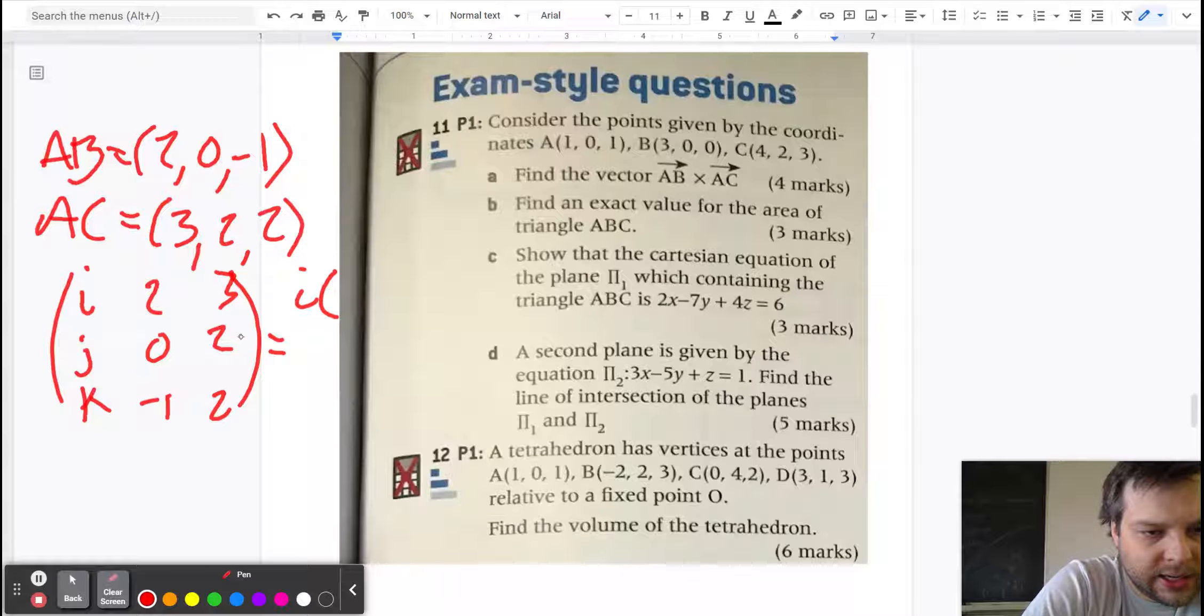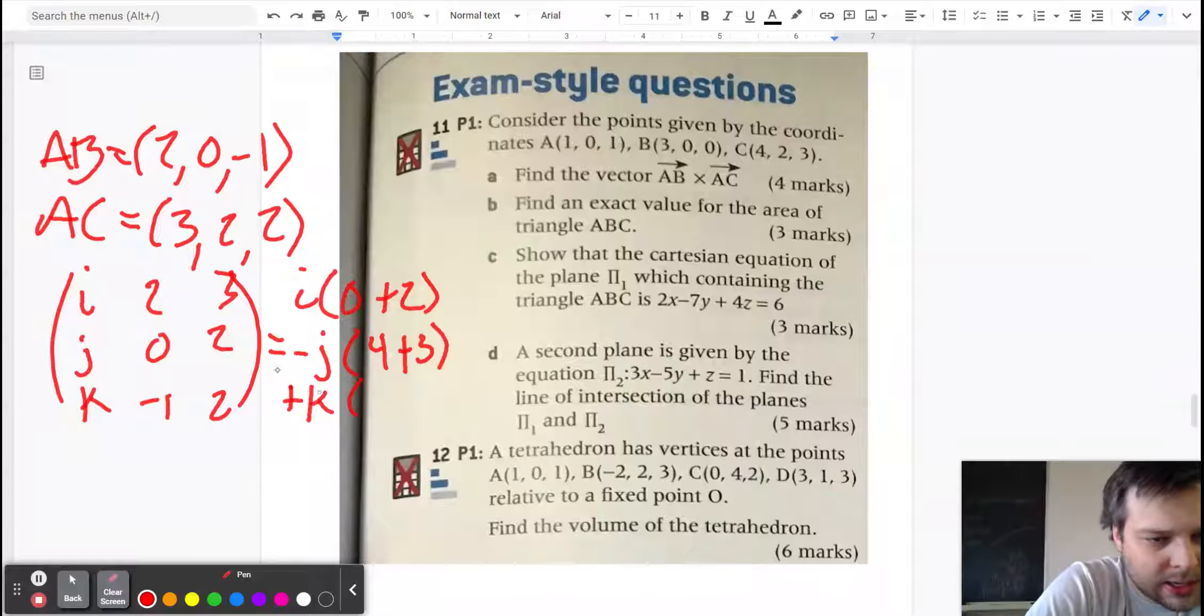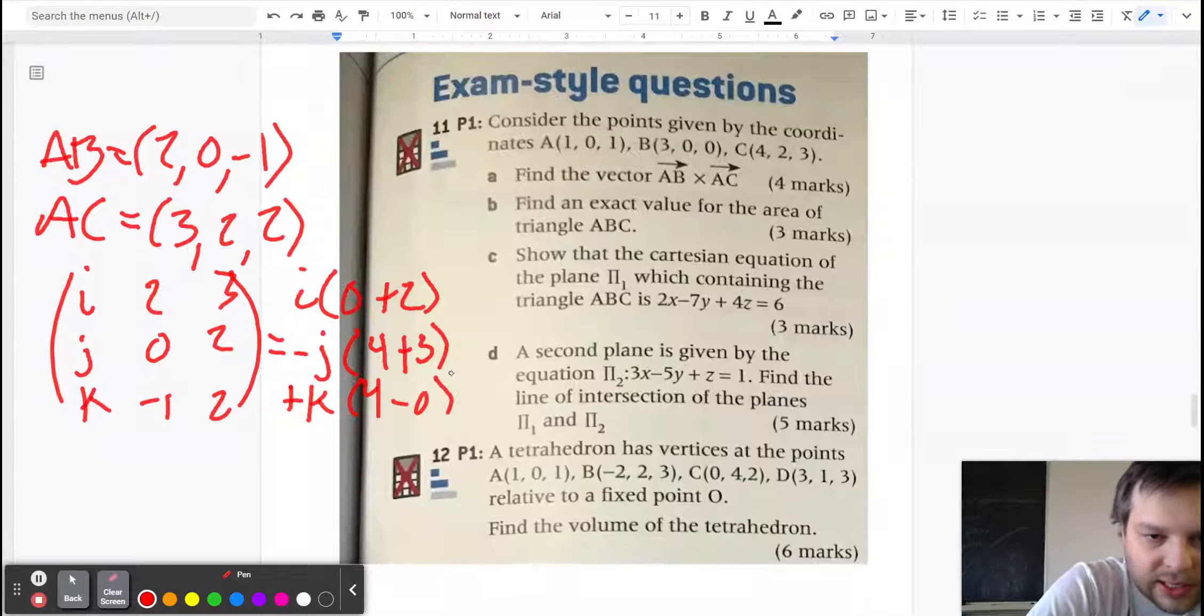We get i times (0 plus 2) minus j times (4 plus 3) plus k times (4 minus 0). I think I did that right, you should double check it for yourself.